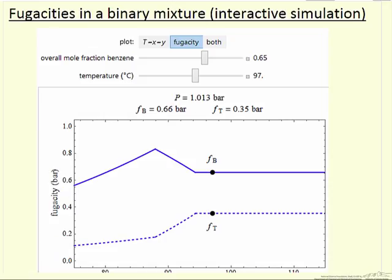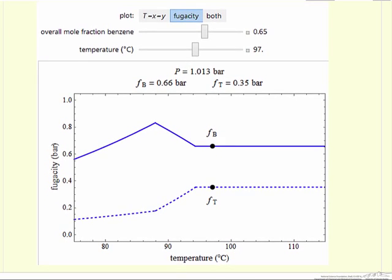This interactive simulation demonstrates relatively complicated behavior of how fugacity changes with temperature. If we look at a snapshot of fugacity as a function of temperature for a given overall mole fraction, this is an ideal solution, benzene-toluene, and the point here represents the condition that we can see on the Txy diagram.